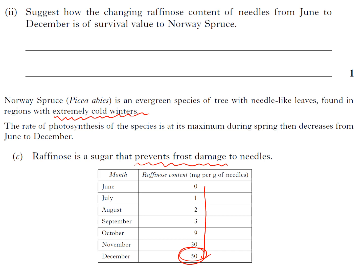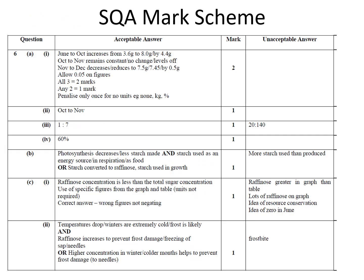And you have to do all of that link to get the mark. You're not going to get it by saying 'because it gets cold,' but you're going to get it if you see 'because it gets cold as you move into December and the raffinose content is increasing, so preventing frost damage.' And that's your whole set.